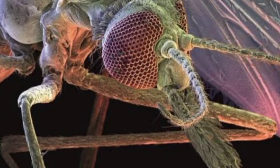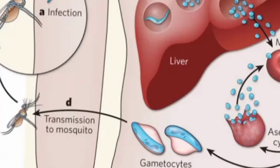Male mosquitoes do not have blood-sucking mouthparts, so they cannot go to someone and suck blood. But female Anopheles mosquitoes do have blood-sucking mouthparts, so they inject their proboscis into the skin and suck blood.